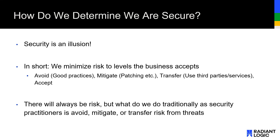Security as we understand it — the CIA triad — is all really just risk mitigation practices. Ultimately, we're looking to do one of four things when we deal with risk: we either want to avoid risk, mitigate risk, transfer, or accept risk. In a perfect world we would do the first three every time, but in reality we need to understand that risk is going to be there and we just need to be prepared for the possibility.